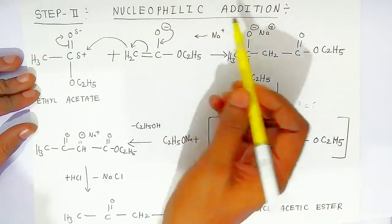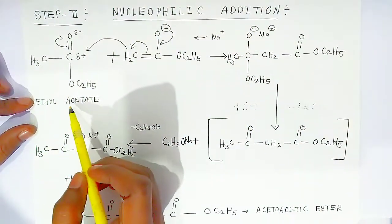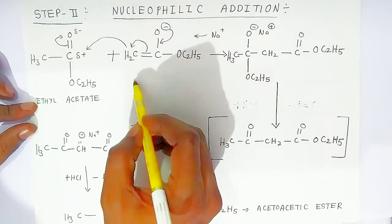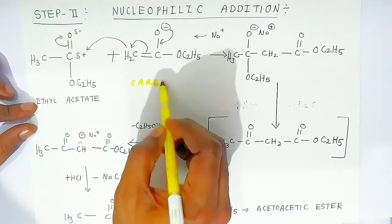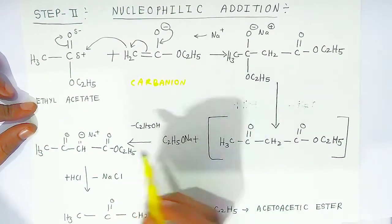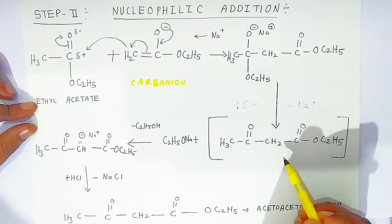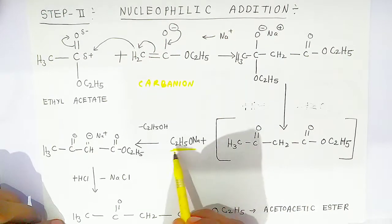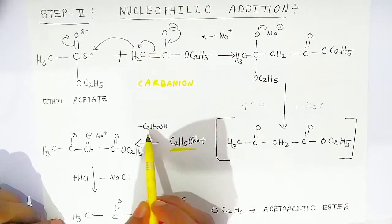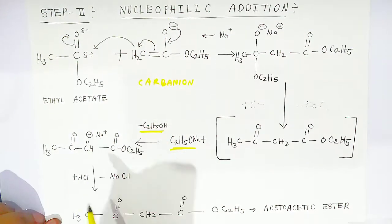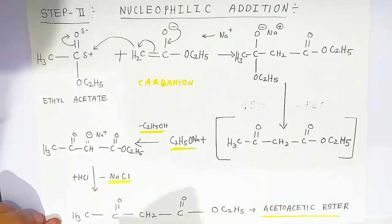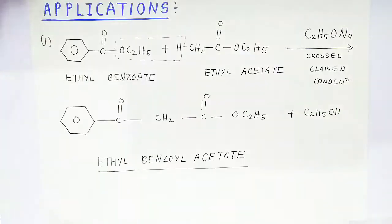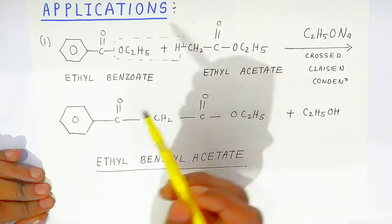In the second step, there is a nucleophilic addition reaction. Ethyl acetate combines with the carbanion to form an addition product. In the presence of sodium ethoxide as base, there is elimination of alcohol and the product converts into a salt. When you add HCl, you get back acetoacetic ester.